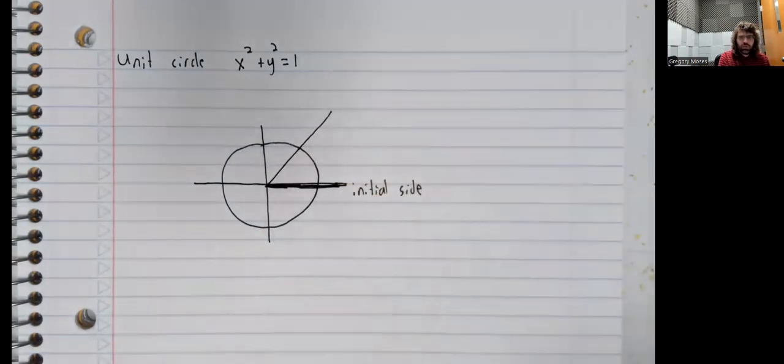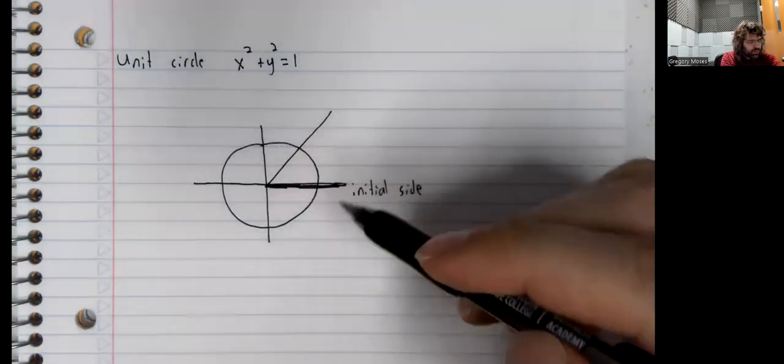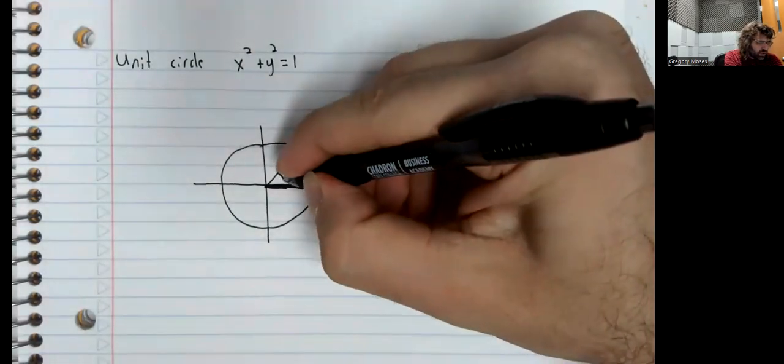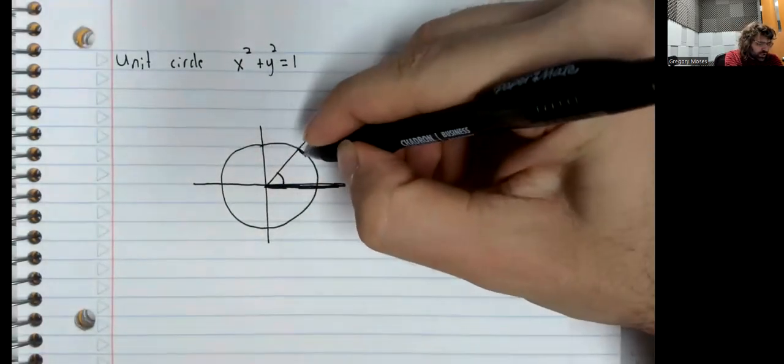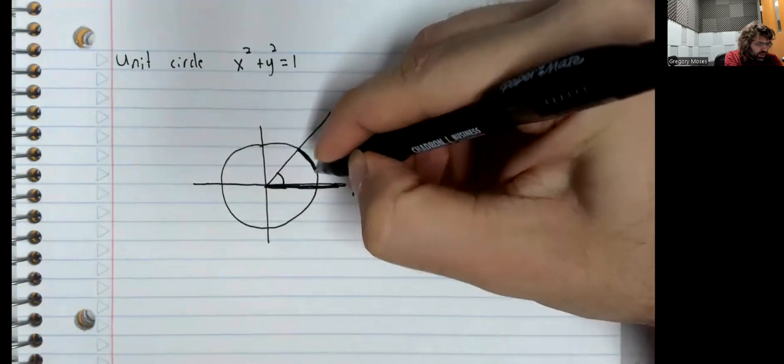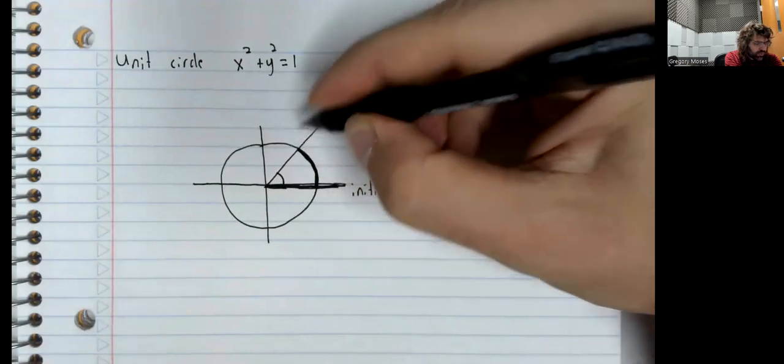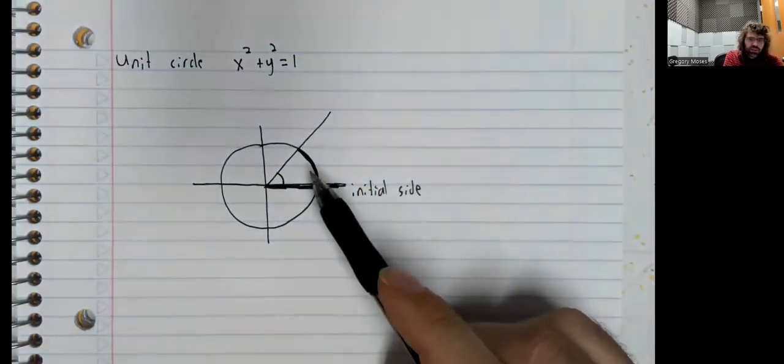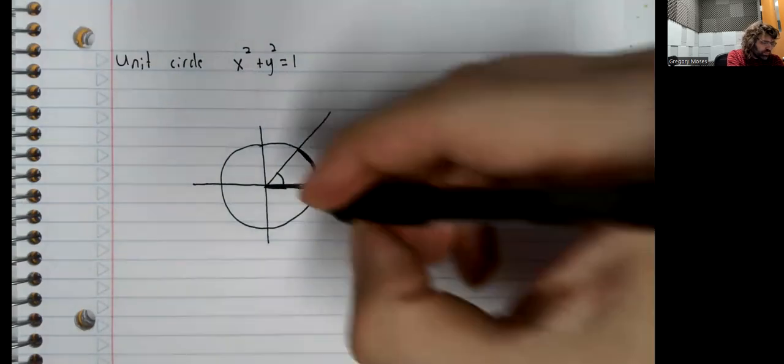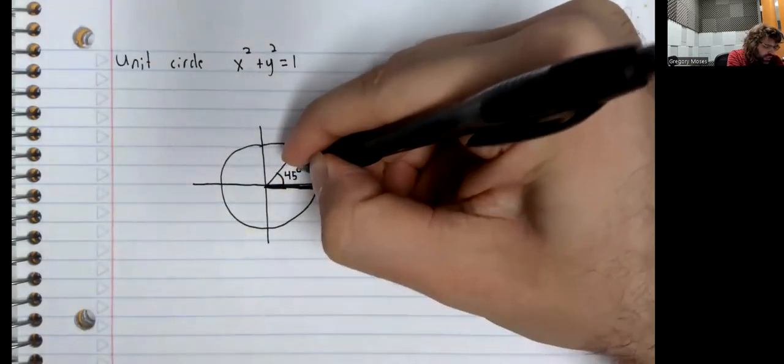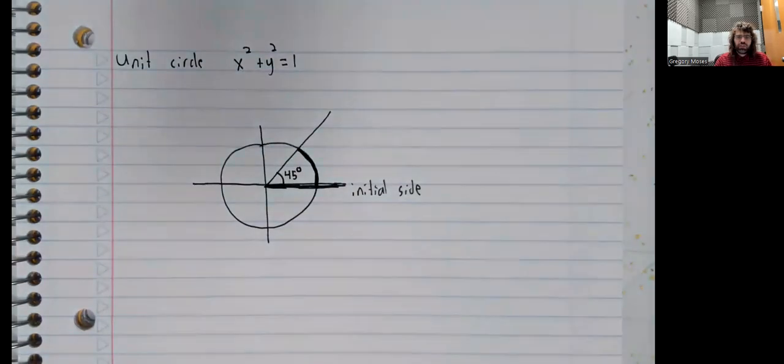We'll make the observation that an angle can be used to define an arc on the unit circle. And let's say this angle is 45 degrees.